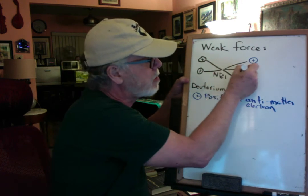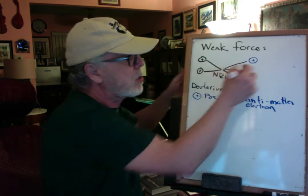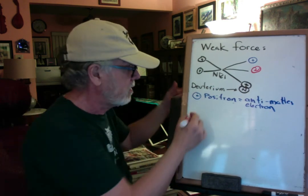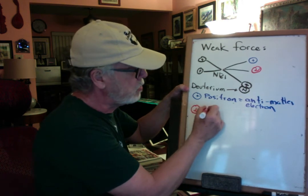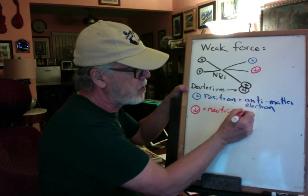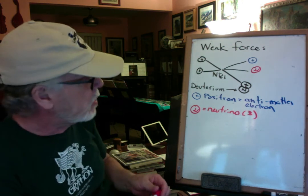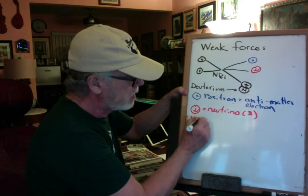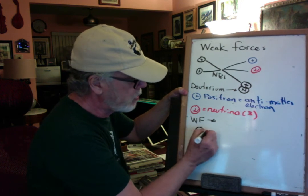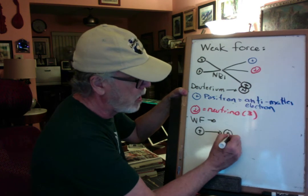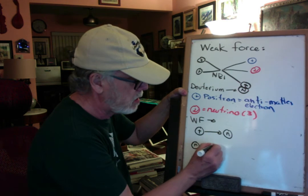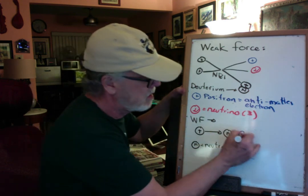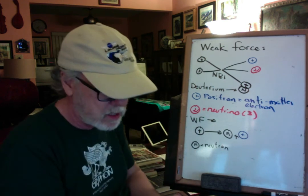This meant that a new particle had to come out — an interesting particle, the ghost particle. This is the neutrino. Remember, how many types of neutrinos are there? There are three types total. The weak force is related to a bunch of these reactions. Specifically, the weak force is related to how one proton breaks down into a neutron, plus a positron, plus the neutrino.